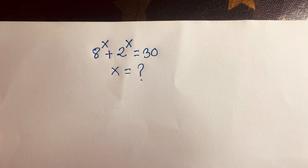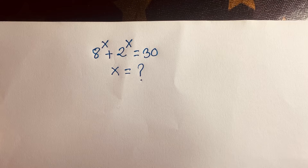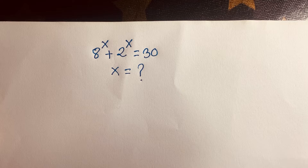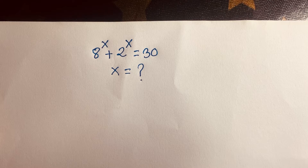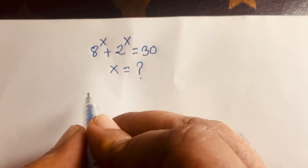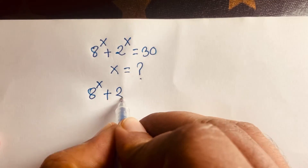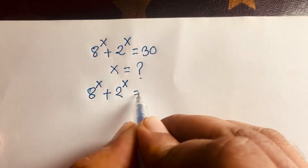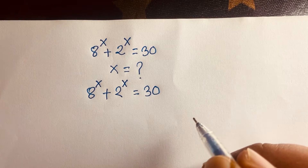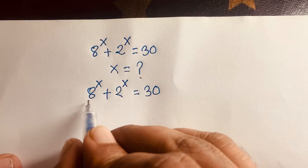Hello everyone. In this video we solve this interesting math question: 8 to the power x plus 2 to the power x is equal to 30, and we'll find out the value of x in this exponential equation. So let's start. Our question is 8 to the power x plus 2 to the power x is equal to 30.